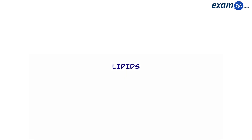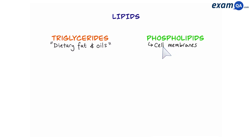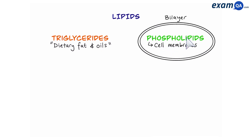Welcome. In this video we're going to be talking about lipids, in particular triglycerides which are found in dietary fats and oils — the stuff that we eat — and phospholipids which make up cell membranes and form a bilayer around our cells. Now before we look at triglycerides, let's talk about lipids in general.